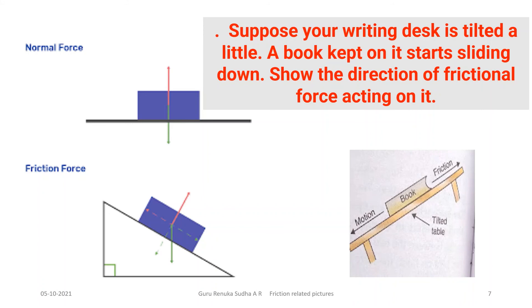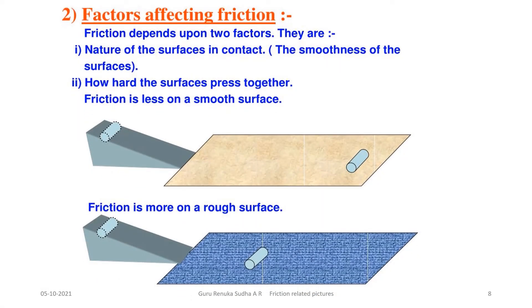The factors on which friction depends are: the nature of the surface in contact — whether the surface is smooth or rough — and how hard the surfaces are pressed together. By observing two pictures, we see how a roller moves a long distance on a smooth surface due to less friction, and how much shorter the distance is on a rough surface. These examples help you understand friction and the factors affecting it. All the best, thank you.